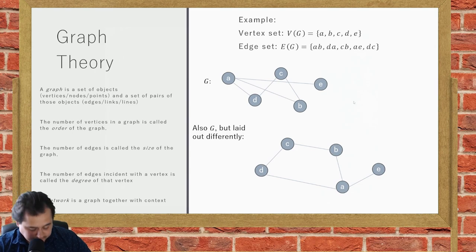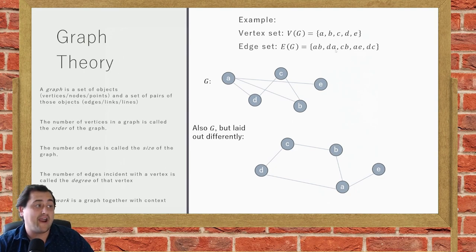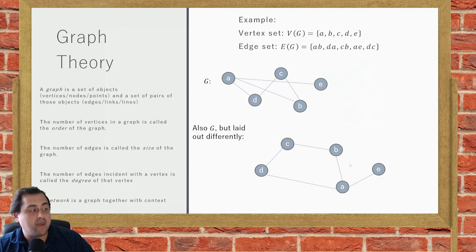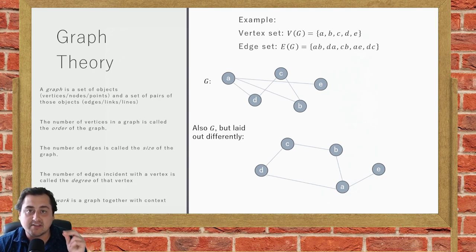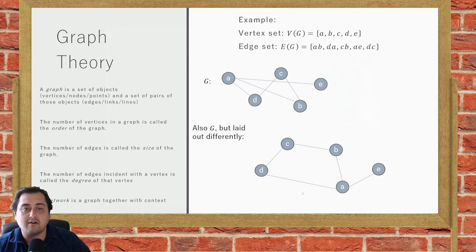A big thing with graph theory is we don't care about the positions of these vertices. A graph is just the set together with a set of pairs. That implies nothing about position of the vertices or overlapping edges. There are lots of different drawings of the same graph. Just to illustrate, here's G again, drawn a little bit differently. The edges are the same: AB, DA, CB, AE, and DC. The edges and vertices are the same, so they are the same graph.